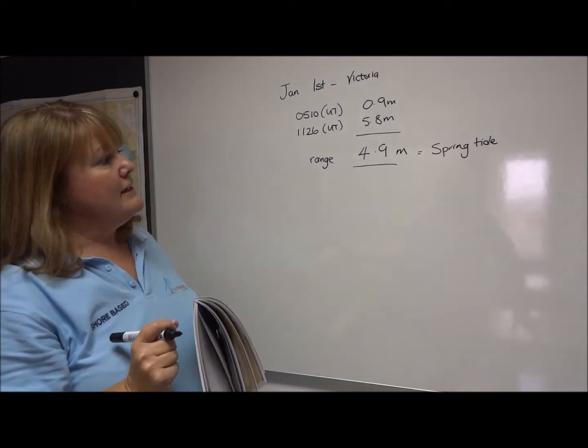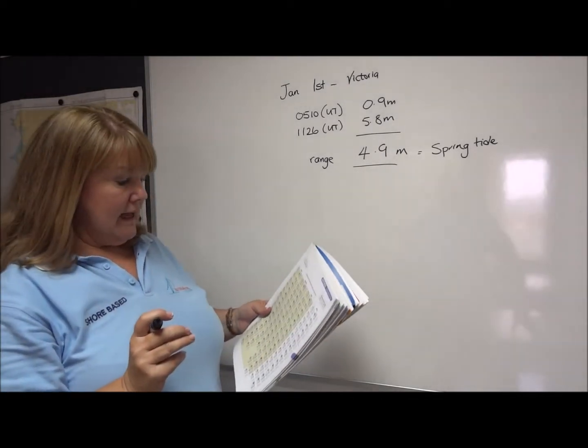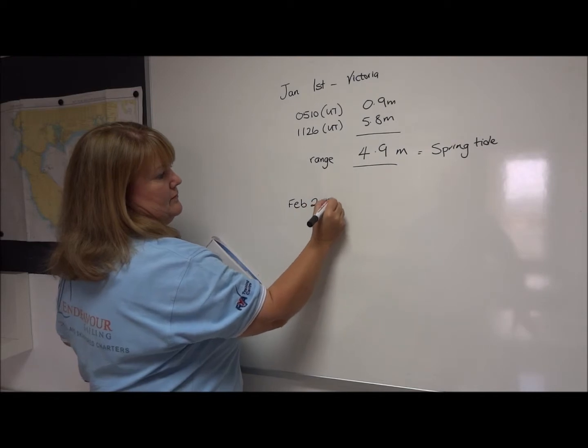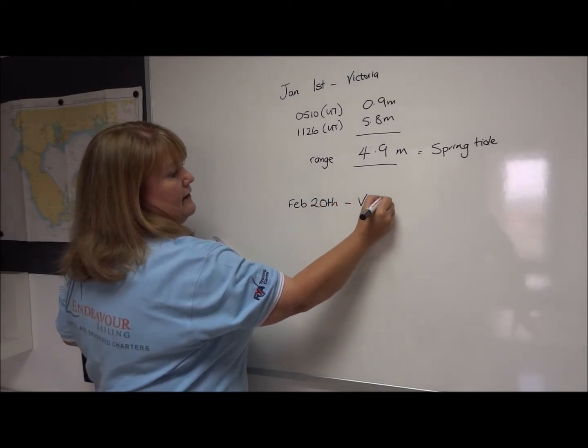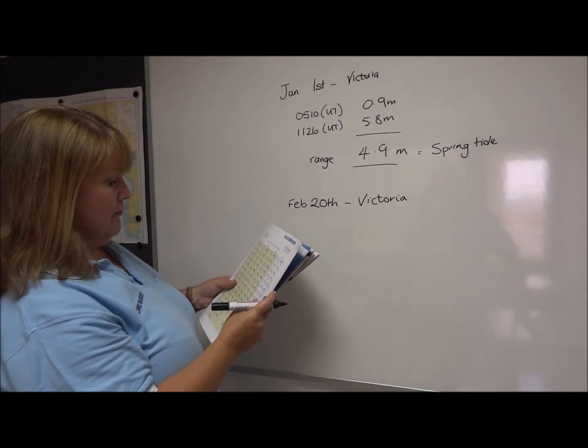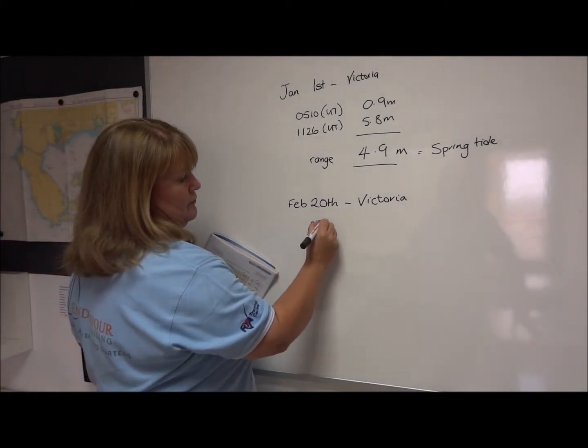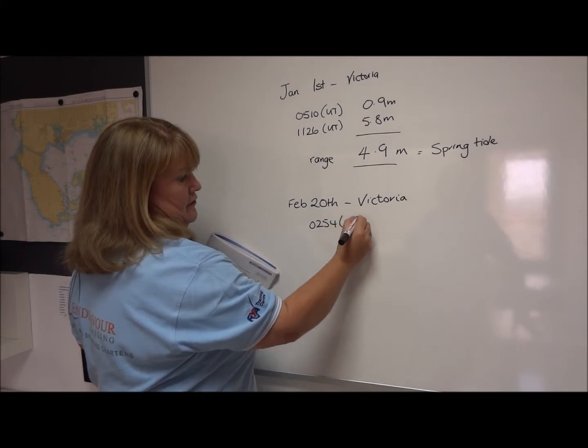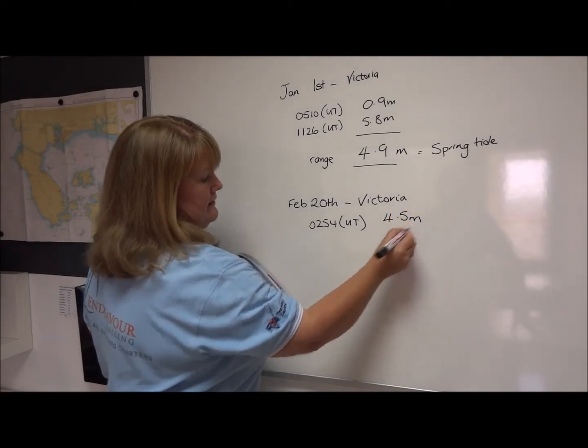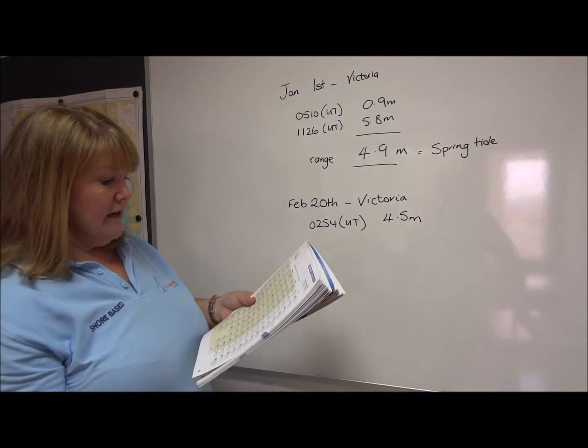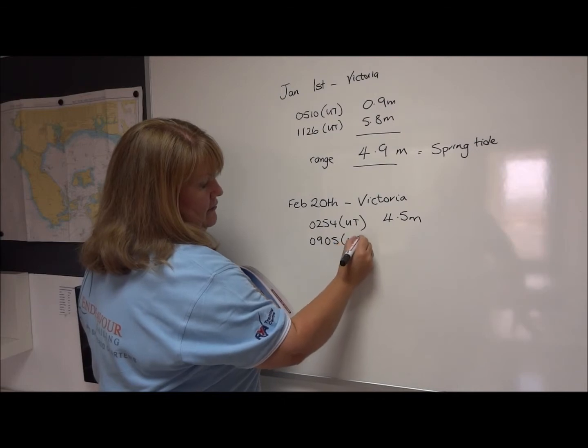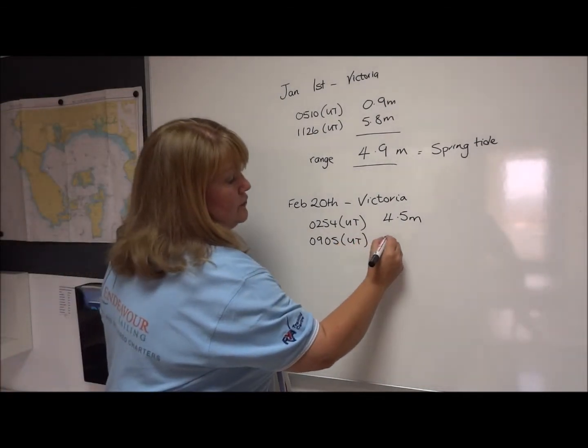So now let's just look at a different date and let's look at February the 20th. February the 20th we have high water at 0254 UT and our high water height is 4.5 metres. We then have low water at 0905 UT and low water is 2 metres.